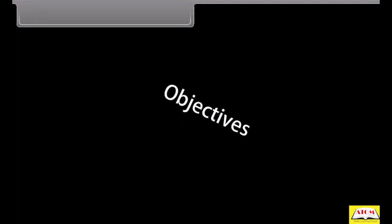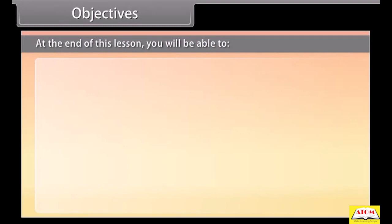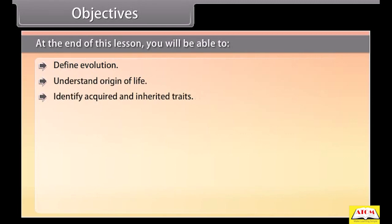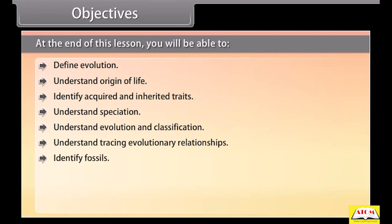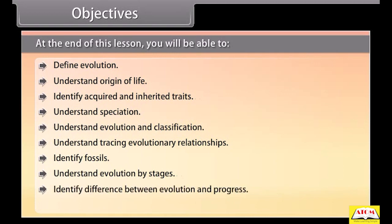At the end of this lesson, you'll be able to: Define Evolution, Understand Origin of Life, Identify Acquired and Inherited Traits, Understand Speciation, Understand Evolution and Classification, Understand Tracing Evolutionary Relationships, Identify Fossils, Understand Evolution by Stages, Identify the Difference Between Evolution and Progress, and Understand the Process of Human Evolution.